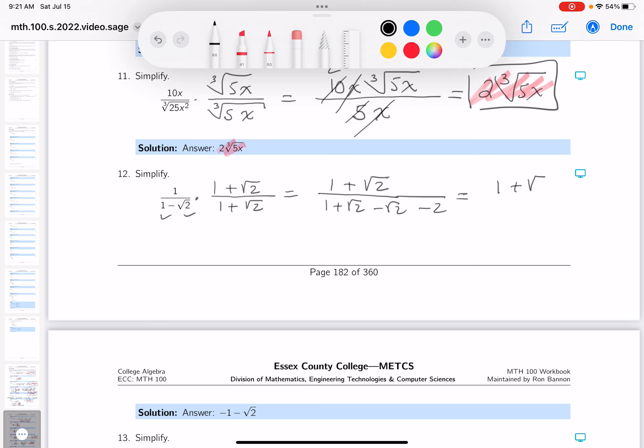What do you get on top? Yeah, 1 plus root 2. What do you get on bottom? Well, the root 2s in the middle disappear, and 1 minus 2 is minus 1. So what do you get over here? Minus 1 minus root 2.